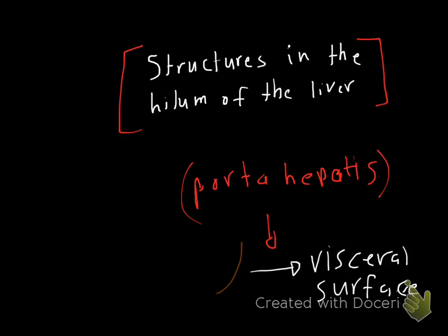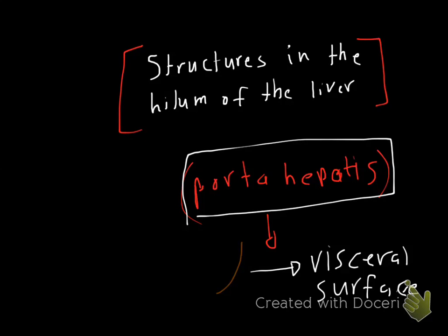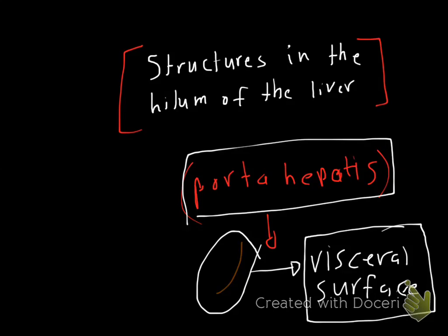How could the portal vein, the hepatic artery, and the bile duct come in or out of the liver? It needs a door or a port to give it access to come into the liver. This door or port is called the porta hepatis. The porta hepatis is the transverse fissure on the visceral surface of the liver, allowing access for the portal vein, hepatic artery, and bile duct.